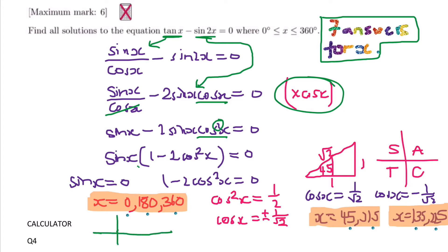So sin x equals 0. Well you just need to remember the sin graph. It goes up, down and back up. So there's three points where it's 0: 0, 180, 360.